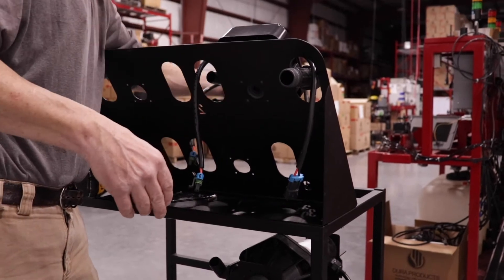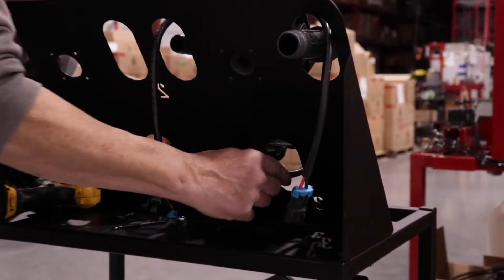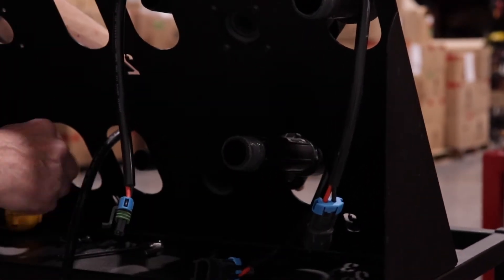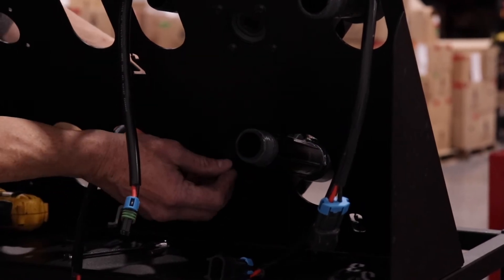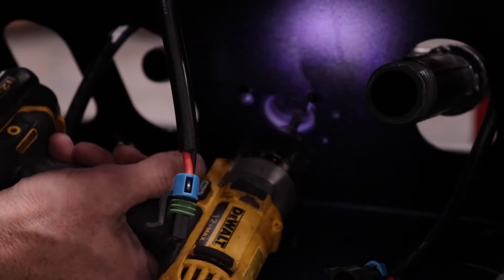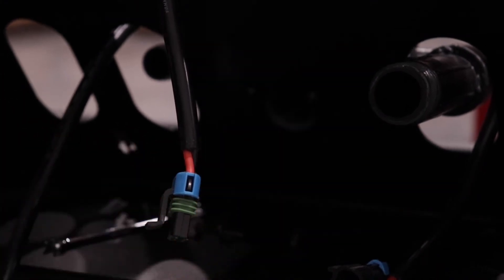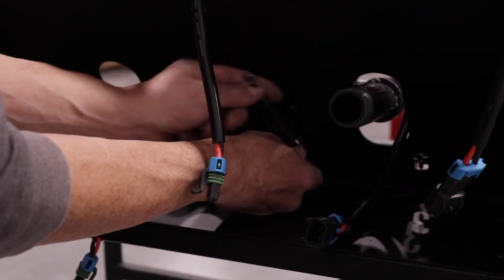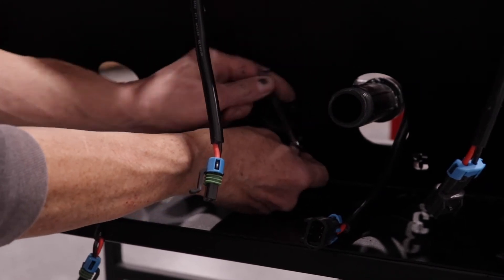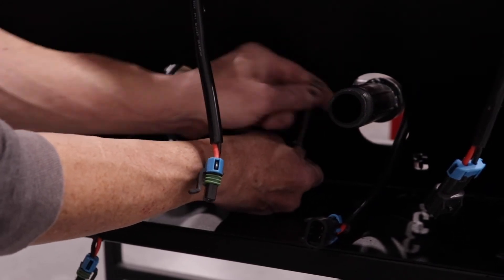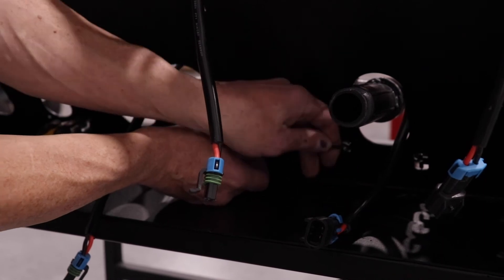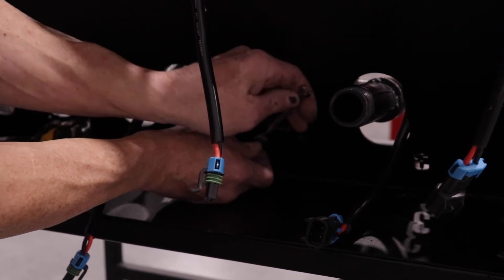In positions number one and number two, a drill/driver can be used for all four screws. In positions number three and number four, a drill/driver can only be used for the top two screws. A small right angle driver must be used for the bottom two screws. The screws need only to be snug. Do not over tighten them.